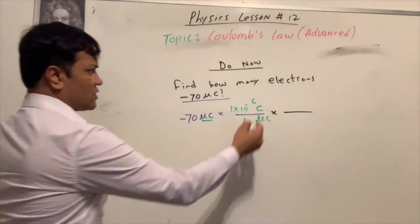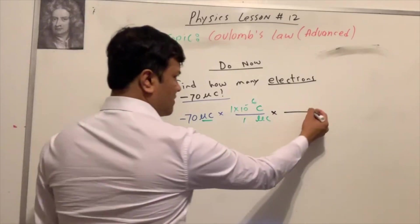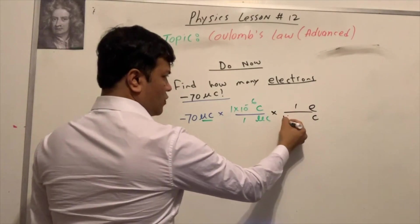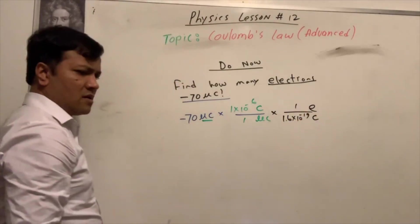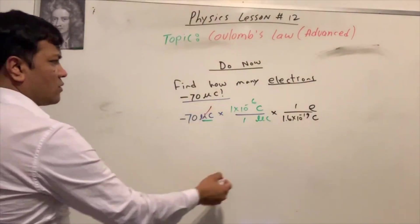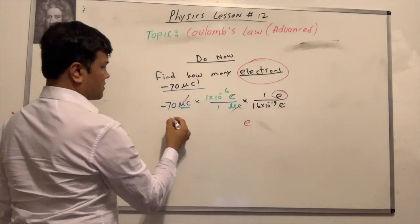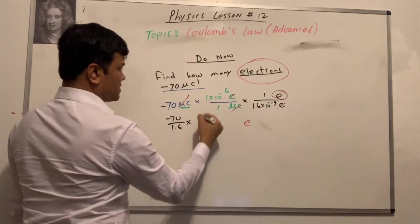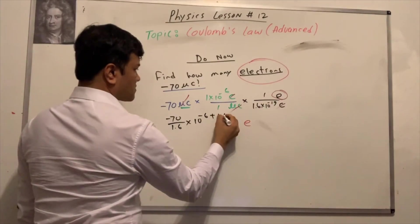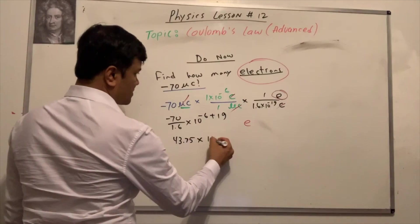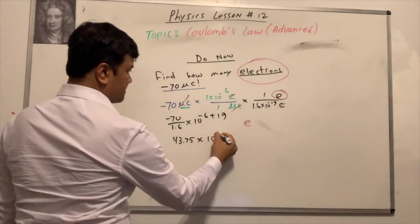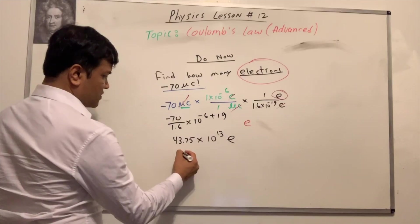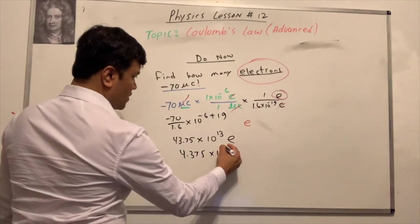Now I need to find how many electrons. So I must have electrons on top. I need to cancel coulombs, so coulombs must be on the bottom. One electron is 1.6 times 10 raised to negative 19 coulombs. Microcoulomb cancels microcoulomb, coulomb cancels coulomb. So: 70 divided by 1.6 times 10 raised to negative 6 plus 19 equals 43.75 times 10 raised to 13. Converting to scientific notation: 4.375 times 10 raised to 14 electrons.